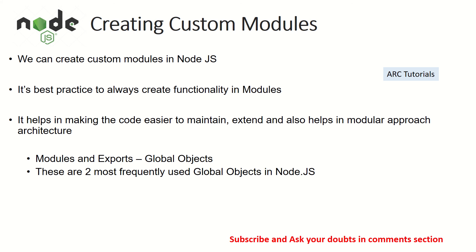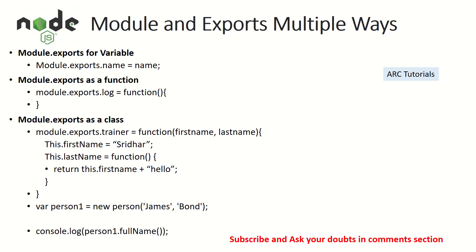We can create any number of custom modules in Node.js for any context — a module can be users, products, orders, invoices, billing, etc. It is best practice to always create modular functionality. Writing everything in one single file will end up becoming a messy, huge codebase, and your code will never be approved for merging. Writing modules helps make code easier to maintain and extend. The two global objects we are going to learn today are modules and exports — the two most heavily used global objects in Node.js.